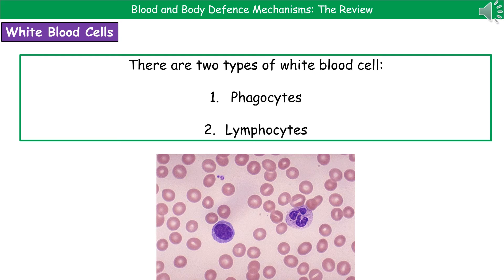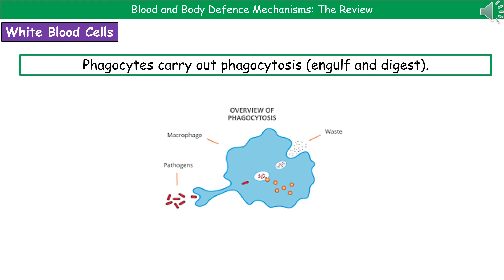In the blood smear at the bottom, on the right we have a phagocyte, which you can see with that multiple nucleus, and on the left you've got the lymphocyte with that very large singular nucleus. The two white blood cells carry out different functions within our immune system. Phagocytes carry out a process called phagocytosis, which means they engulf and digest any microorganisms. The pathogens are the little red rod-shaped bits; our phagocyte is the blue blob in the middle. They expand out and engulf, surrounding the pathogen, then enzymes come in and break down the pathogen, releasing the waste products.